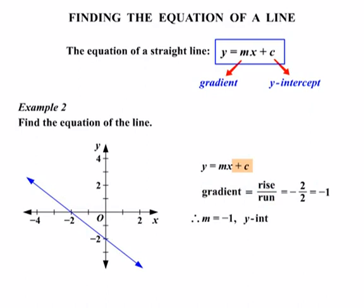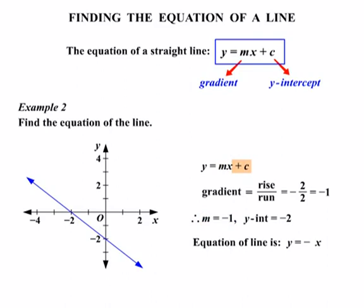Now for our plus c, or our y-intercept — there's our y-axis, and there's the point where the line cuts through it. Our y-intercept is minus two. So the equation of our line: y equals mx, where m is minus one, so we write minus x, and then plus c where our y-intercept is minus two. The equation of the line is y equals minus x minus two.